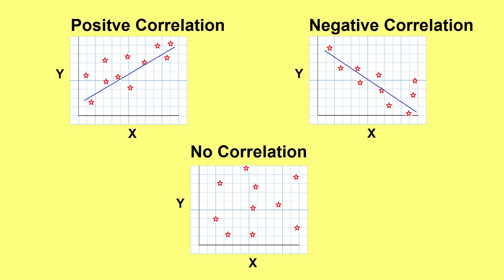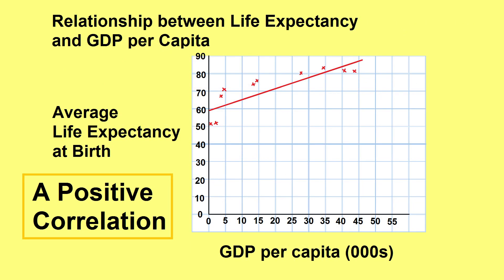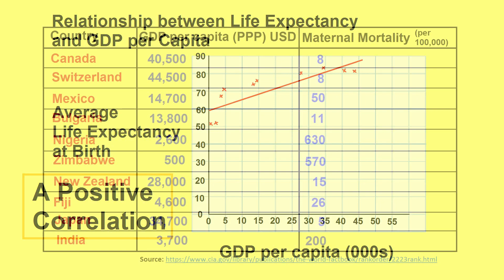Scatter graphs usually produce three patterns. In a positive relationship or correlation, both factors will move in the same direction. In the graph we drew there is a positive correlation, because as GDP per capita increases so does the average life expectancy.